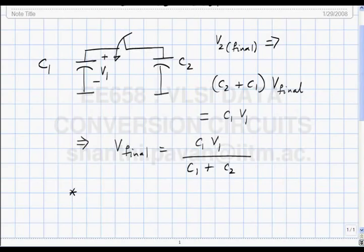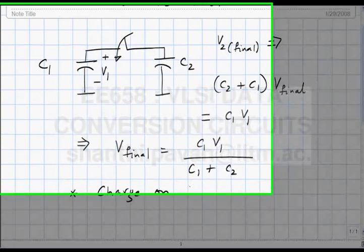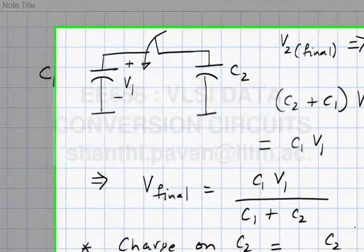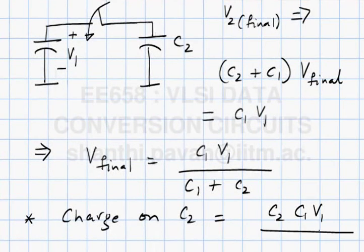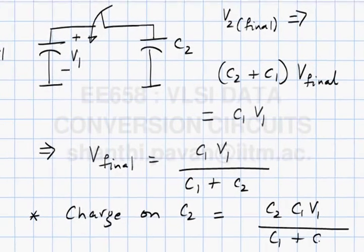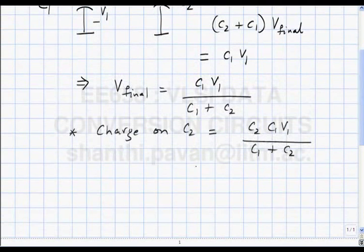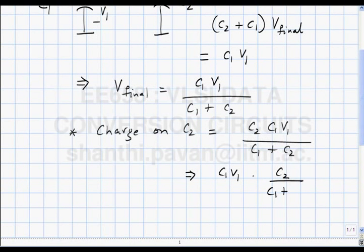The final voltage is clearly not the same as the initial voltage. More importantly, the charge on C2 is C2 times C1·V1/(C1+C2), which is simply capacitance times voltage. You see that this is the initial charge C1·V1 times C2/(C1+C2).